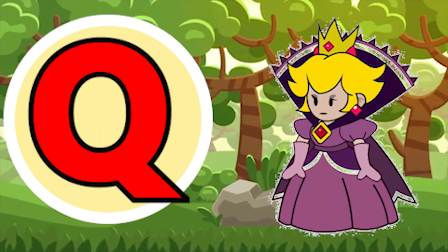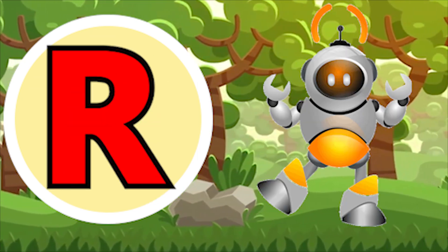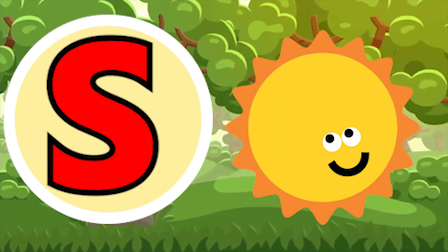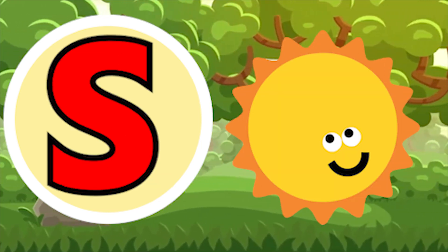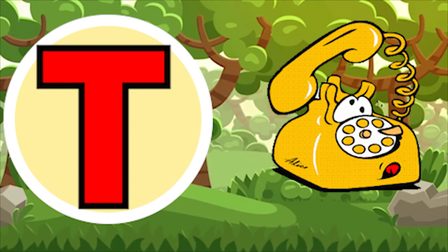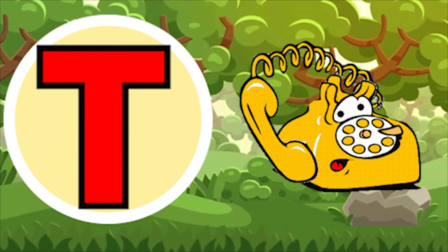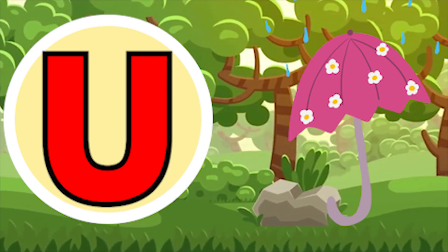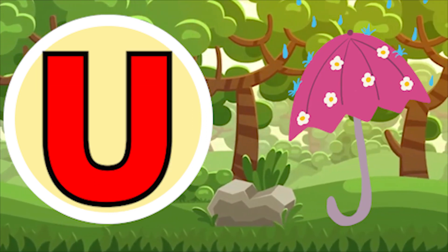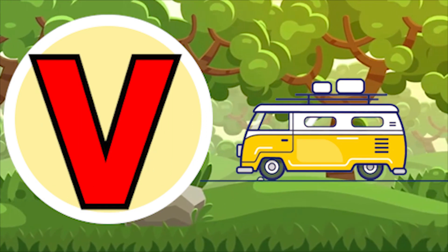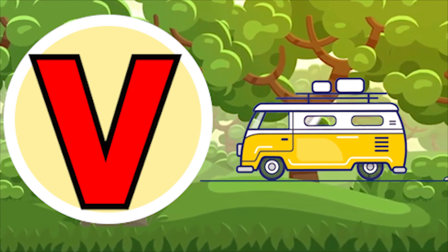R for robot, S for sun, T for telephone, U for umbrella, V for van.